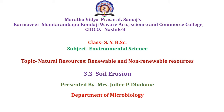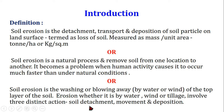Students, today we are going to see unit number 3, section 3.3 — soil erosion. The definition of soil erosion is the detachment, transport and deposition of soil particles on the land surface, termed as loss of soil, measured as mass per unit area — ton per hectare or kilogram per square meter. Soil erosion is also defined as a natural process that removes soil from one location to another.